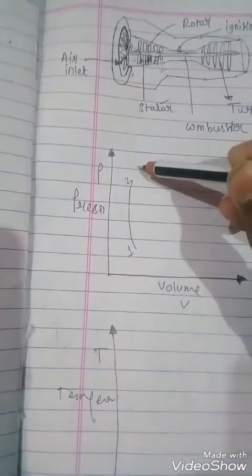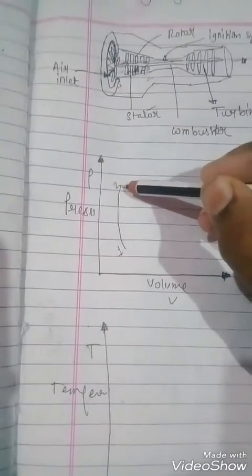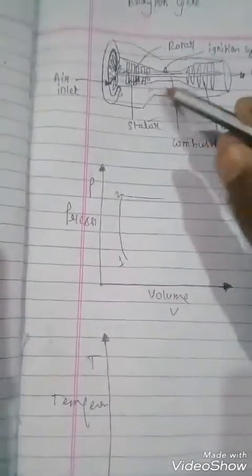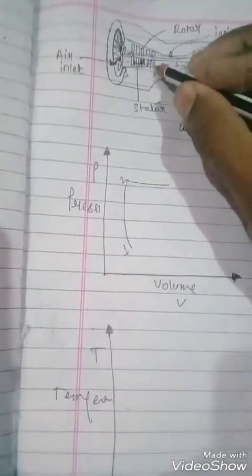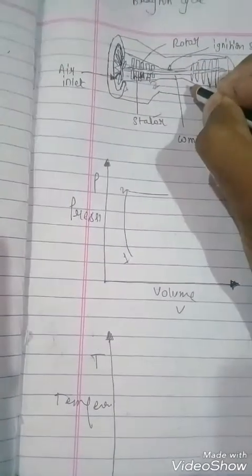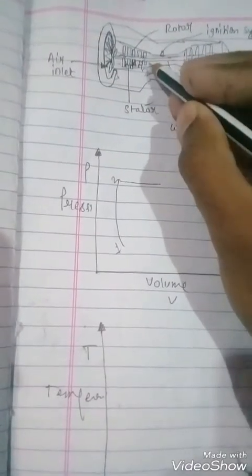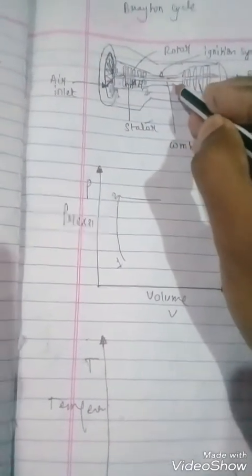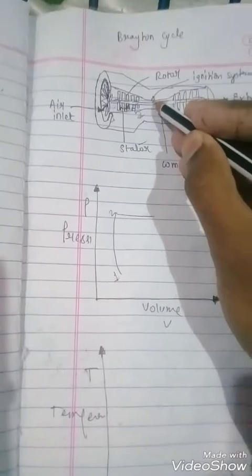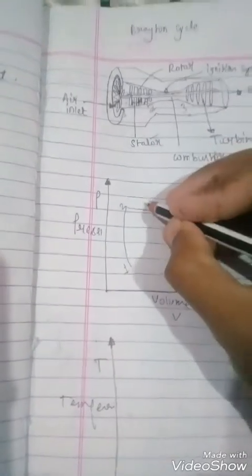So the pressure is increasing from one to two, and from two to three the pressure does not change inside the combustion chamber and we are supplying the heat.